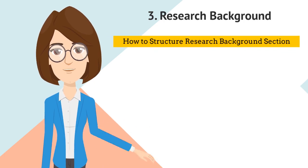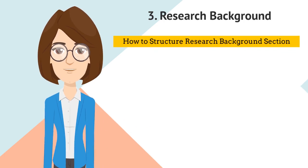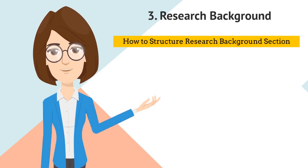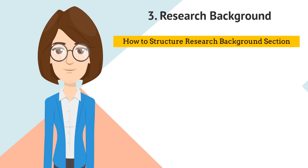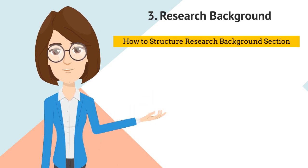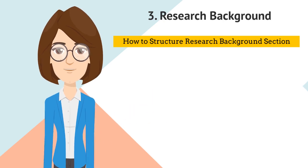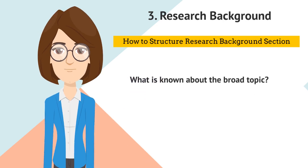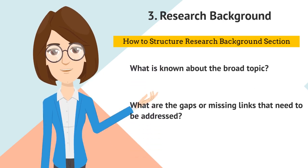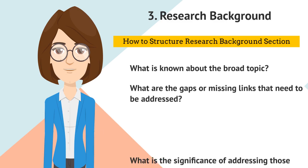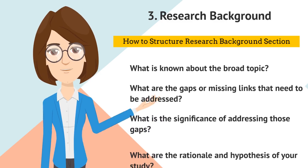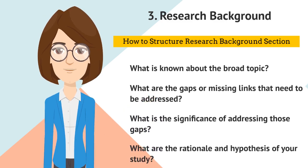The research background section should briefly highlight the main developments of the research topic and identify the main gaps that need to be addressed. It should be organized around four questions: What is known about the broad topic? What are the gaps or missing links that need to be addressed? What is the significance of addressing those gaps? What are the rationale and hypothesis of your study?